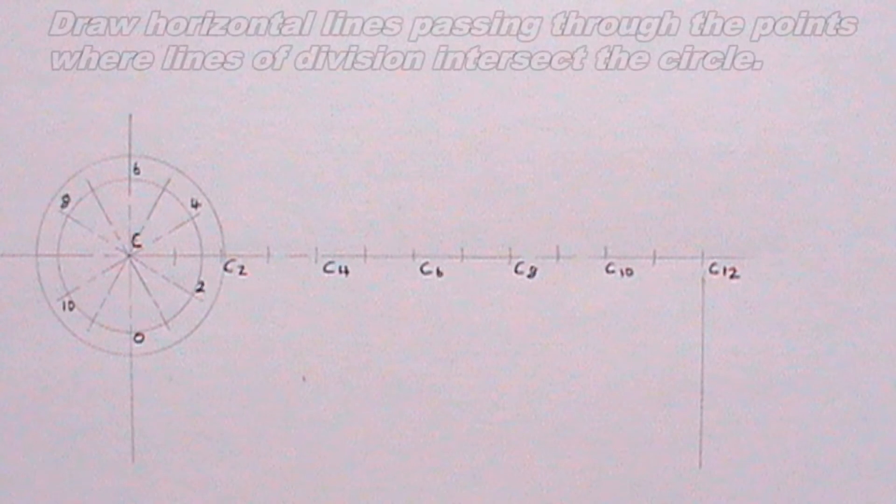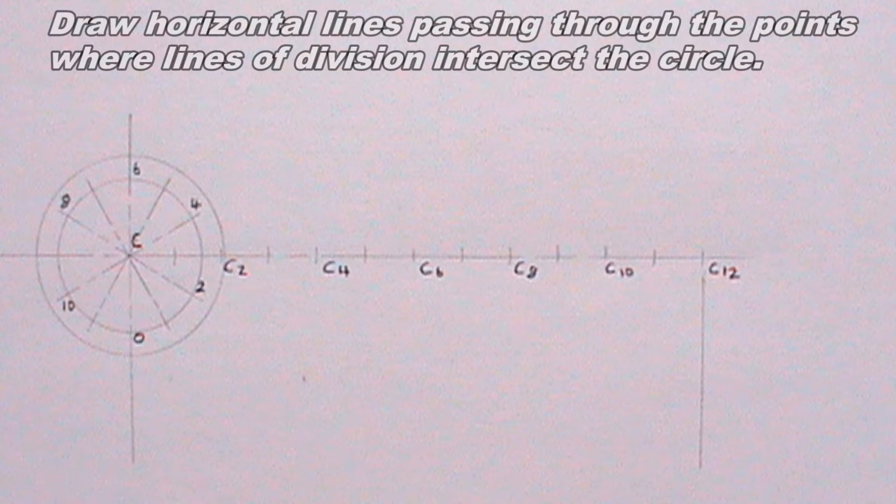Next, I will draw horizontal lines passing through the points where lines of division intersect the circle. This step can be done this way.